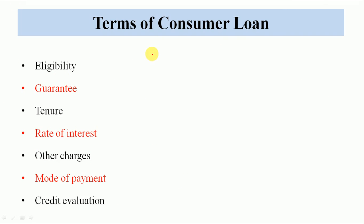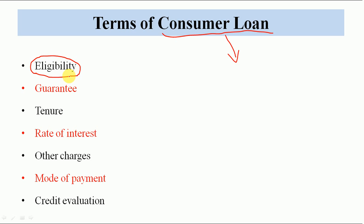Consumer loan ki andar jab bhi aapko personal loan ya koi car loan, education loan lene jao, usmein kya kya cheezein dekhi jati hain? Sabse pehla dekha jata hai aapki eligibility. Eligibility kaise check hoti hai? Usmein aapka dekha jata hai aapki income kya hai, aur kis tarah ka aap employment hai, aapki kis nature ki hai, aap permanent ho ya aap temporary. Kama kar rahe ho, aapka kitna time ho gaya hai, aap regular post pe ho, aapki tankhwa kitni hai, aapka PF ke andar paise kat rahe hain ya nahi.